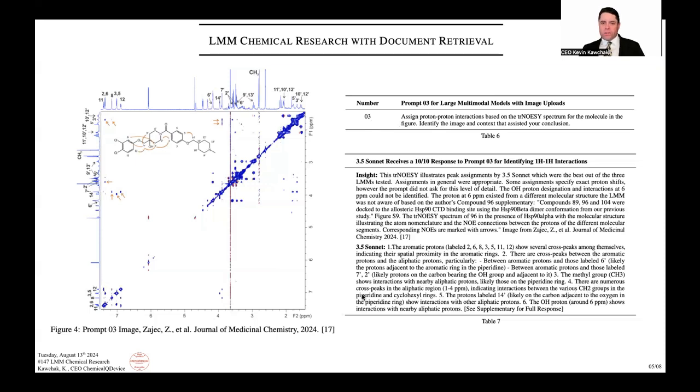It says there are numerous cross peaks in the aliphatic region indicating interactions between the various CH2 groups. I was shocked that it was able to do a 2D NMR this well, understanding what's going on between the structure, the two axes, and mostly the off peaks, the correlations. These are really good results. This is why I made the manuscript.